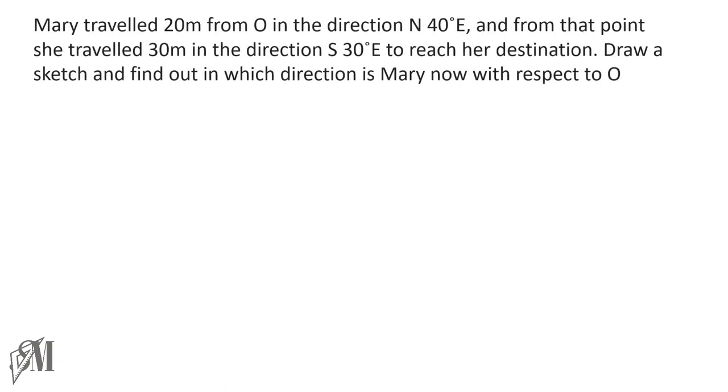Mary traveled 20 meters from O in the direction of north 40 degrees east. So you have to mark this data in a sketch and then find out in which direction Mary is at the end of her journey. So here is Mary. I mark the point as O and to mark the direction she moves, let me draw the four main directions like this. I mark only the north for convenience. From north to east 40 degrees we have to take, and she has moved a distance of 20 meters. So I mark the data like this.